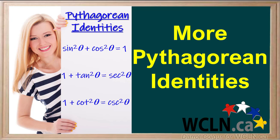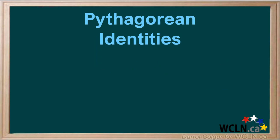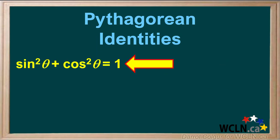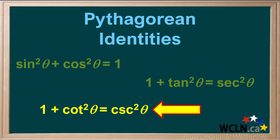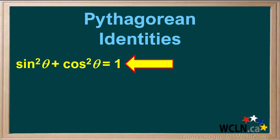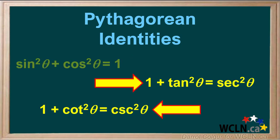There are additional Pythagorean identities that are very useful to us. There are three Pythagorean identities. The first one you've probably seen already: sin squared theta plus cos squared theta equals 1. The second is 1 plus tan squared theta equals secant squared theta. The third is 1 plus cotangent squared theta equals cosecant squared theta. You've already seen the proof for the first identity; here we'll show you the proofs for the other two.